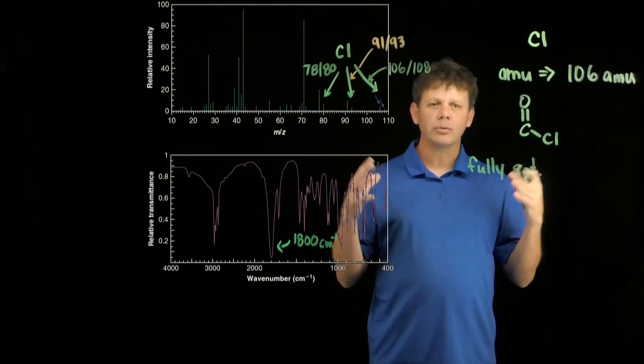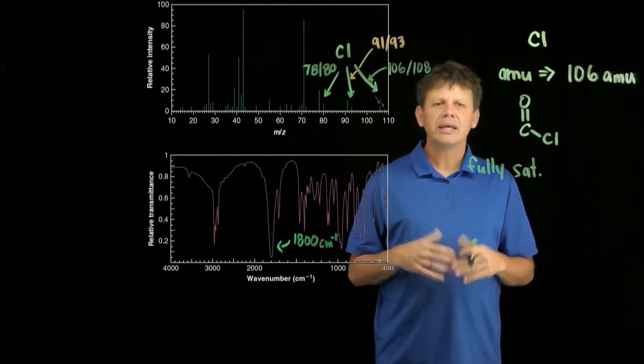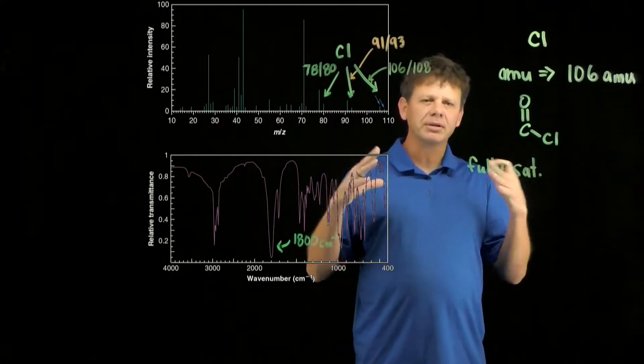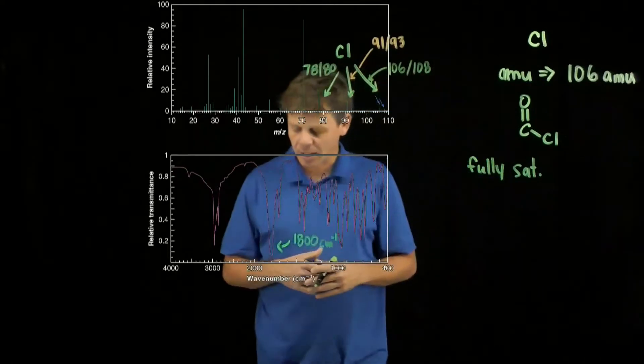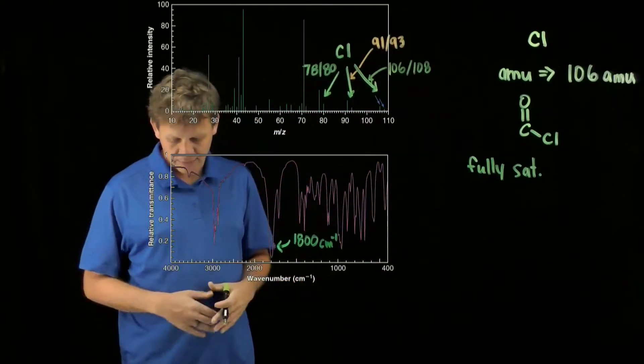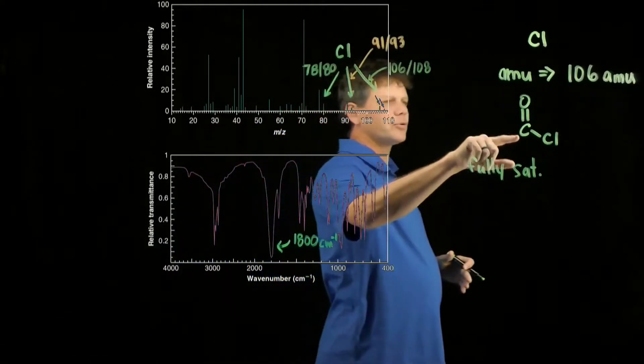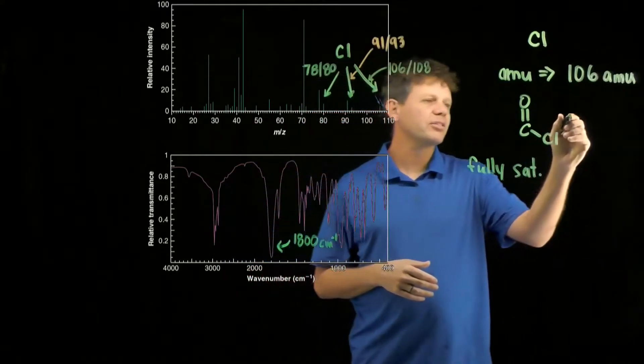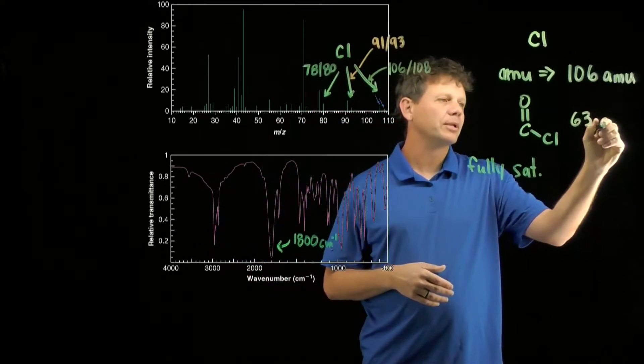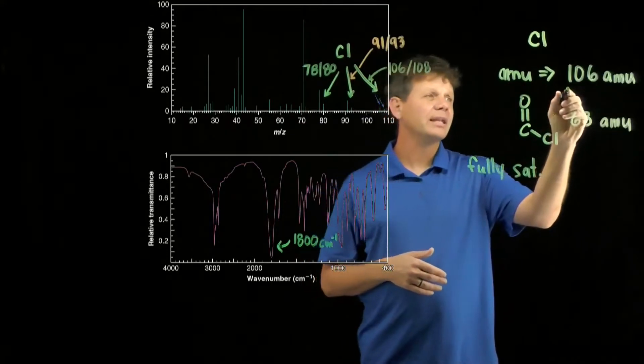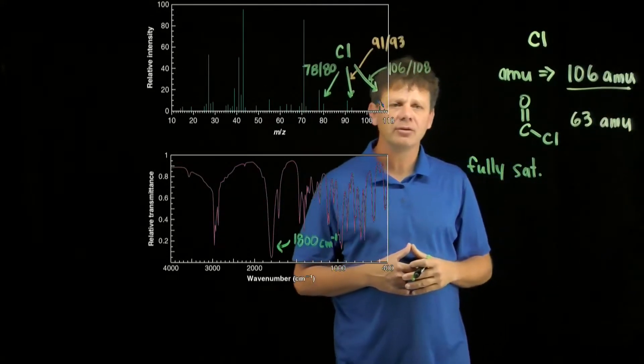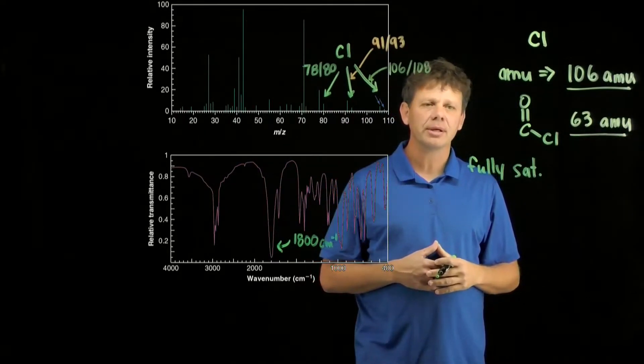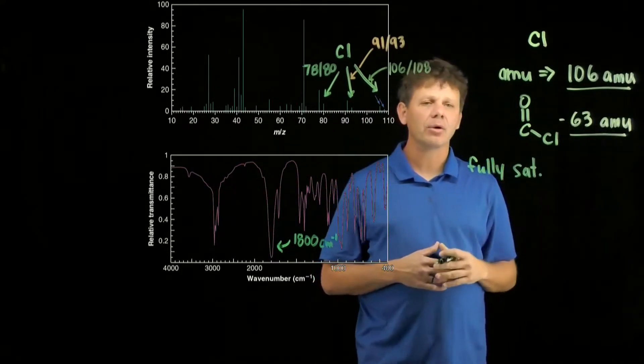Now here's where we can start to use some logic. This acid chloride functional group COCl, its atomic mass is going to be 63 atomic mass units. We said that the original molecule contains 106.